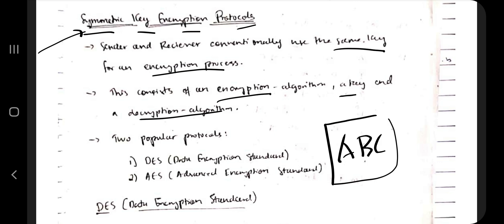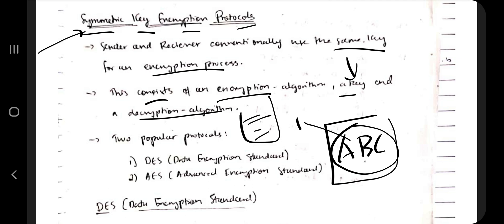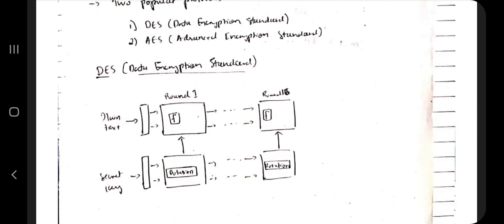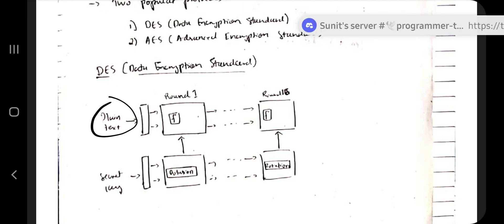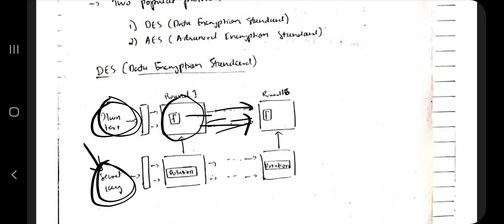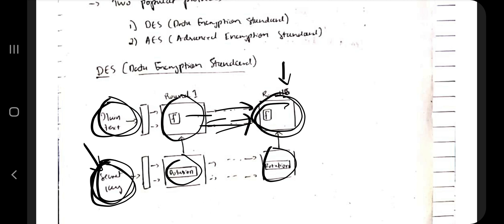In DES we have plain text and a secret key. The plain text is transferred through different rounds in the algorithm, with rotation happening at each round — the data goes through 16 rounds. By using the secret key, we can de-rotate it and get the plain text again. In round one, the plain text has 64 bits and the key has 56 bits.